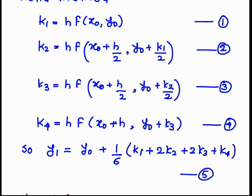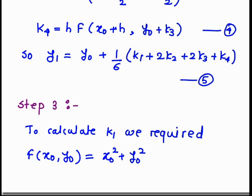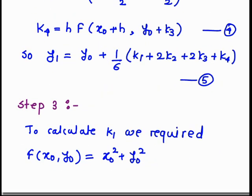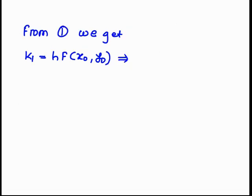Step 3 — the calculation part. To calculate k₁ we require f(x₀, y₀). f(x₀, y₀) = x₀² + y₀² = 1² + 1.5² = 3.25. This value is used to calculate k₁. By substituting: k₁ = 0.2 × f(x₀, y₀) = 0.2 × 3.25, so k₁ = 0.65.